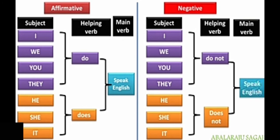We can classify simple present tense sentences into three categories: affirmative, negative and interrogative. Let us know the structure of them. Affirmative sentences means the positive statements. Negative sentences are the sentences which have negative words like no, not, none, never and so on. Affirmative means positive. In affirmative sentences: subject plus helping verb plus main verb.